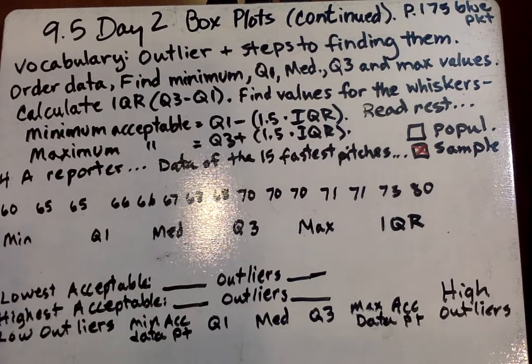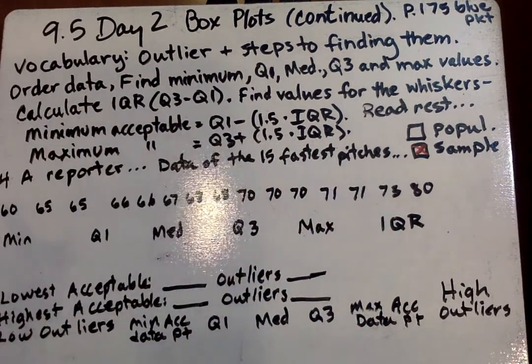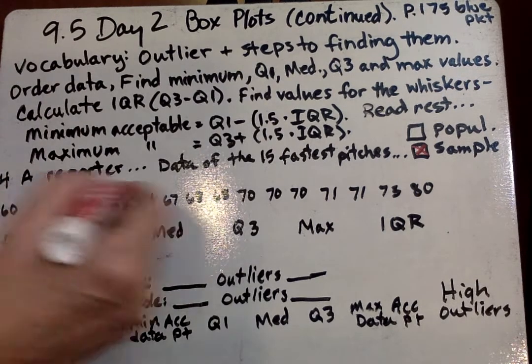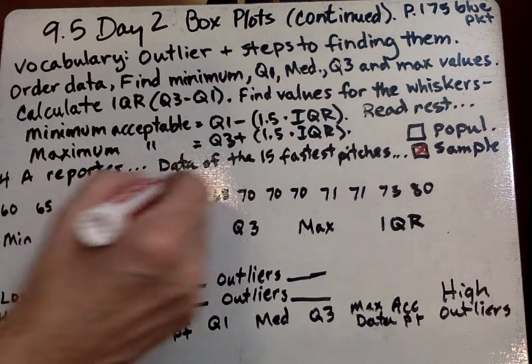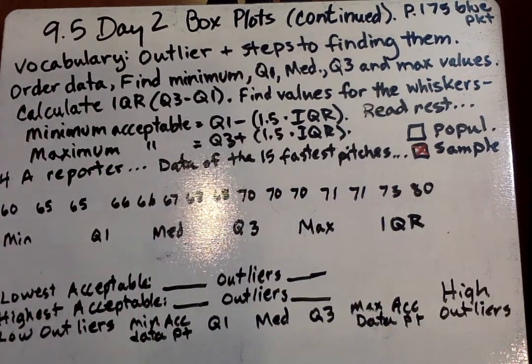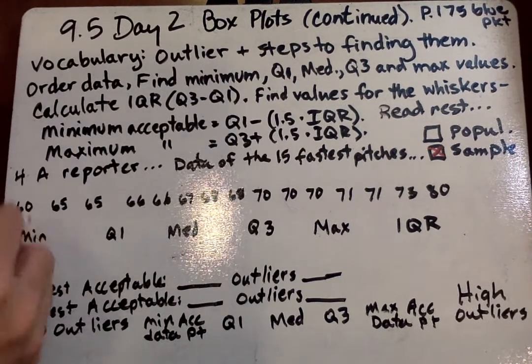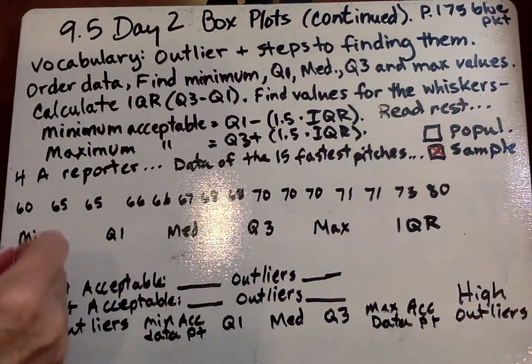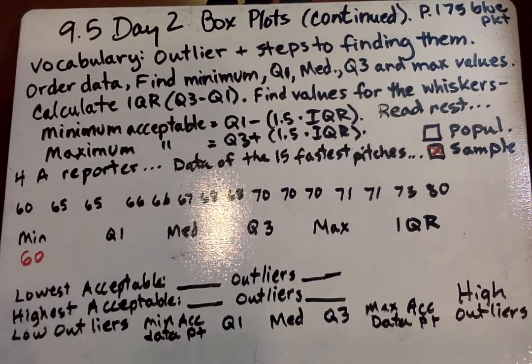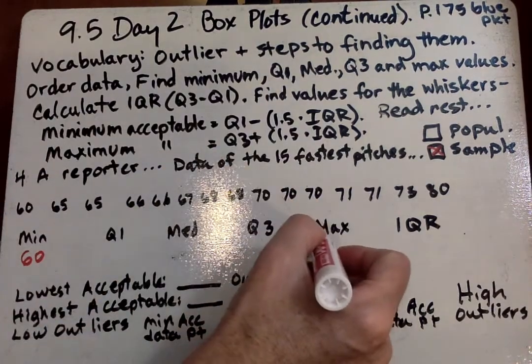Next, here are all the data right here. We're going to find our minimum value, which is the lowest number. They already have it ordered here, so that's a good thing you don't have to do. So let's go ahead and put our minimum is 60. Our maximum is 80.